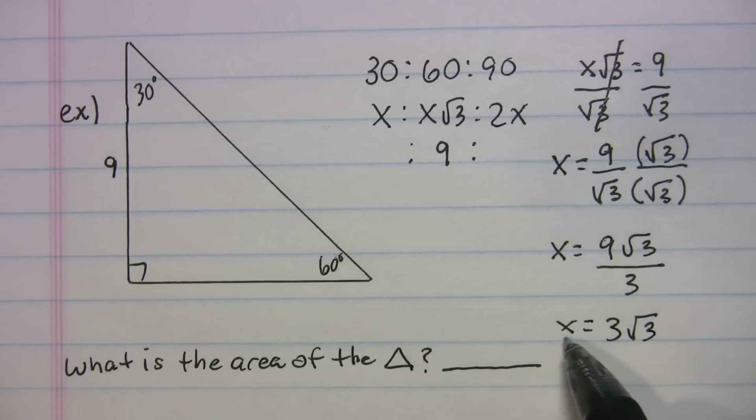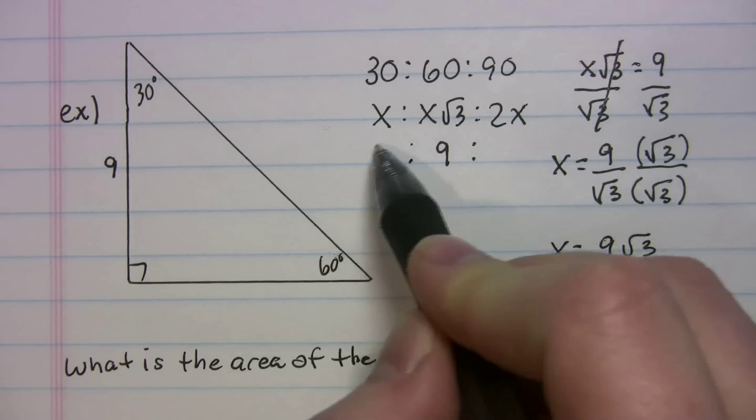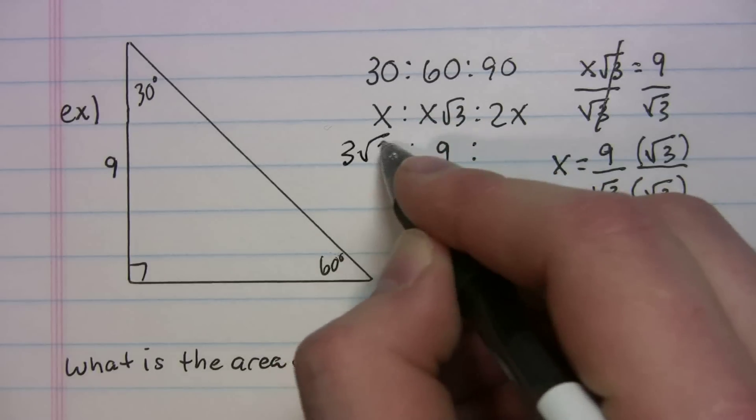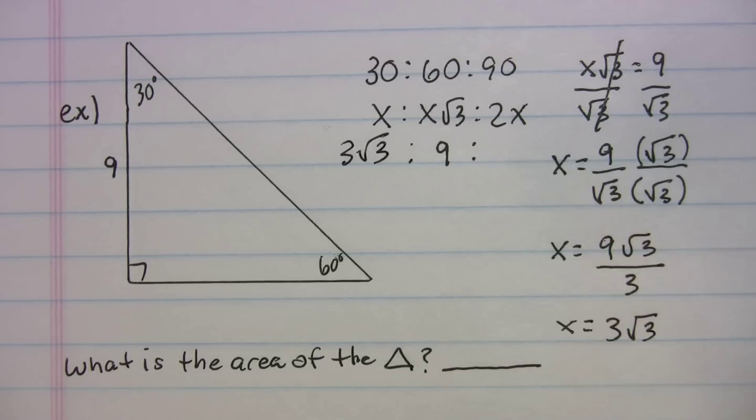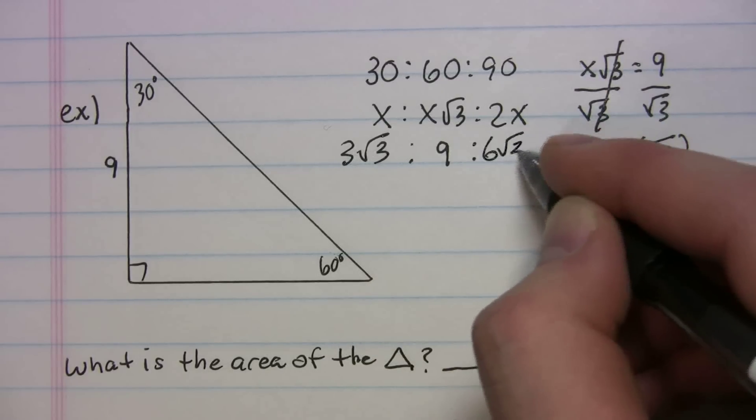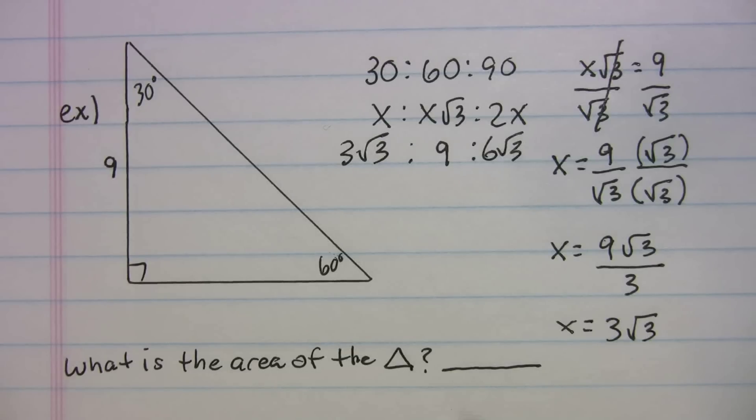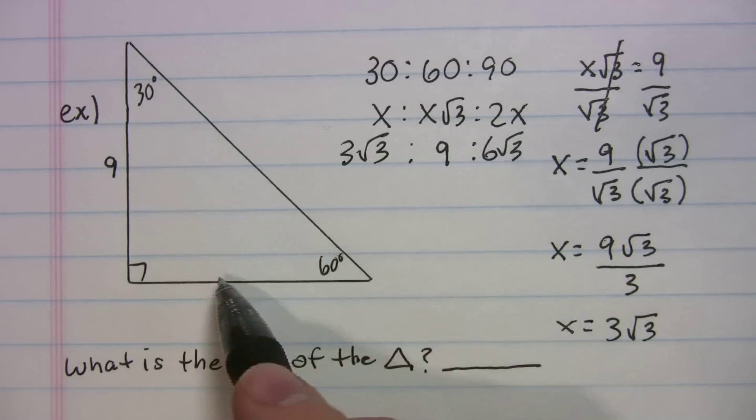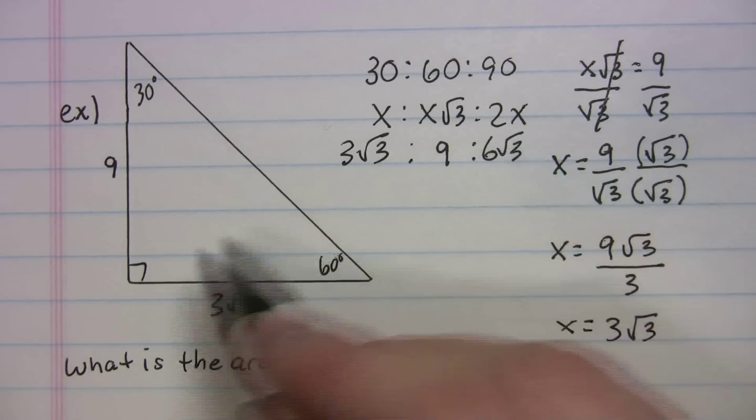So now that I know that x equals 3 radical 3, we'll put that back in here. x, 3 rad 3. 2x, well it's just going to be 2 times that. So 6 radical 3. So now I have my side lengths, I can pop them in. Opposite 30, 3 radical 3. Opposite 90, 6 radical 3.